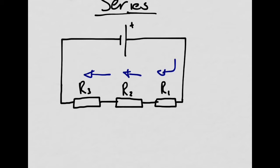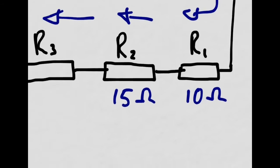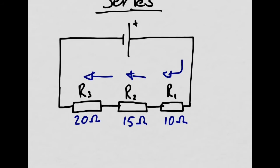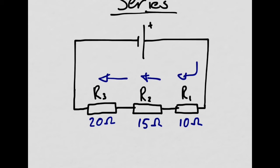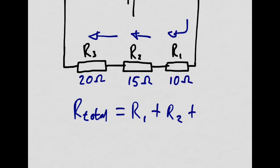Let's give these resistors some values. Let's say this is 10 ohms, this is 15 ohms, and this one here has the highest resistance — 20 ohms. What is the total resistance of this circuit going to be? Because the current has to flow through one, then the other, then the other, the total resistance is going to just add together. So R total is just R1 plus R2 plus R3.